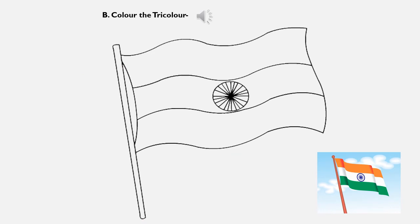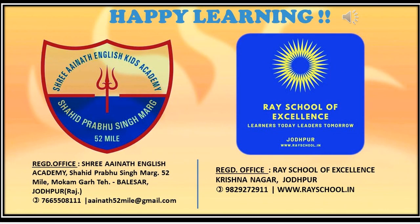In the next worksheet, you have to color the tricolor. You know the colors — which colors go where, step by step. This is our India's national flag, so color it correctly. You can look at the picture and color it. Draw it in your notebook — make it nicely and color it beautifully. Don't forget to send your assignments — after completing your work, click a picture and send it to ma'am. So children, I hope you liked the video. Thank you so much.